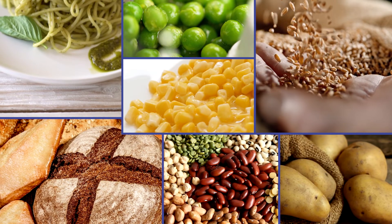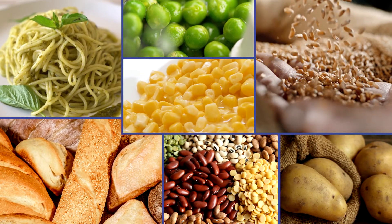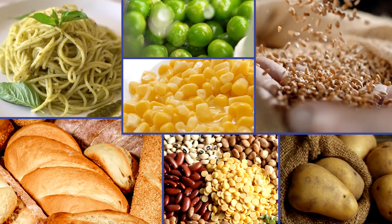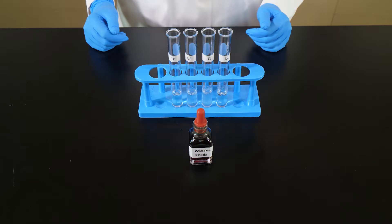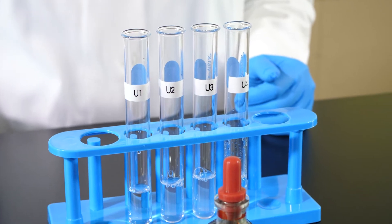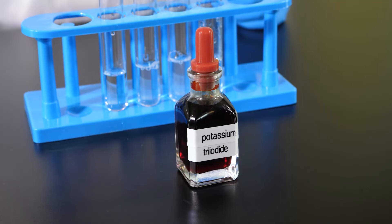Our second nutrient test will be for starch, which is a complex carbohydrate. Starch is found in bread, pasta, corn, peas, beans, potatoes, and cereal grains such as rice, wheat, and oats. To detect starch in a solution, we use a chemical indicator called potassium triiodide solution.